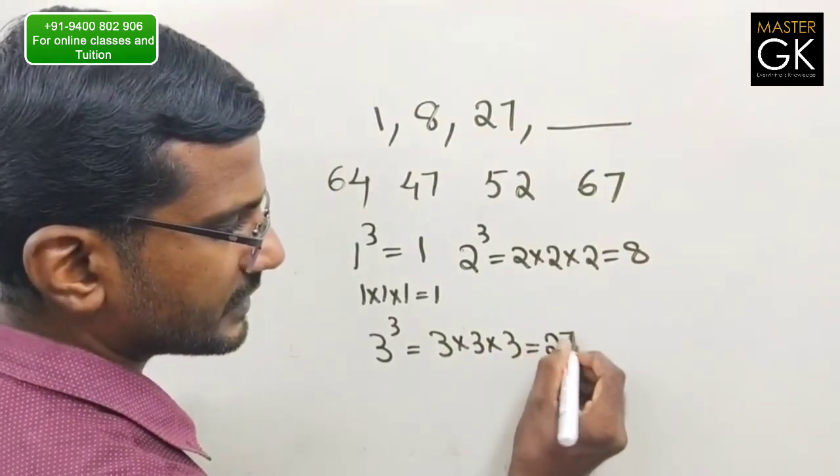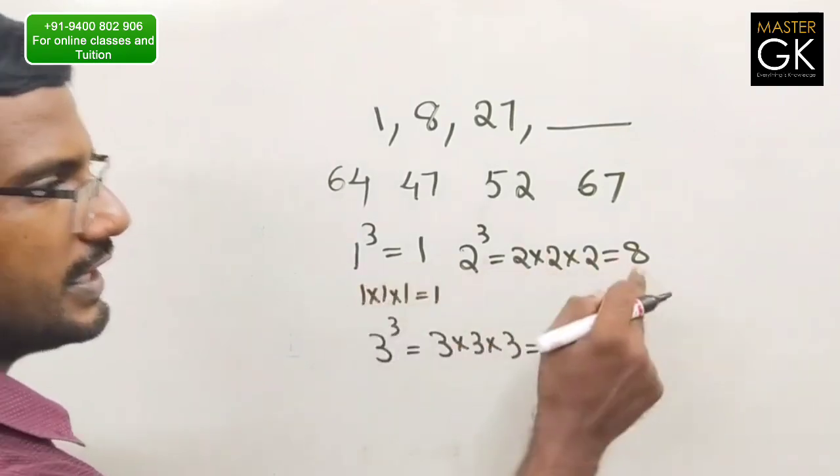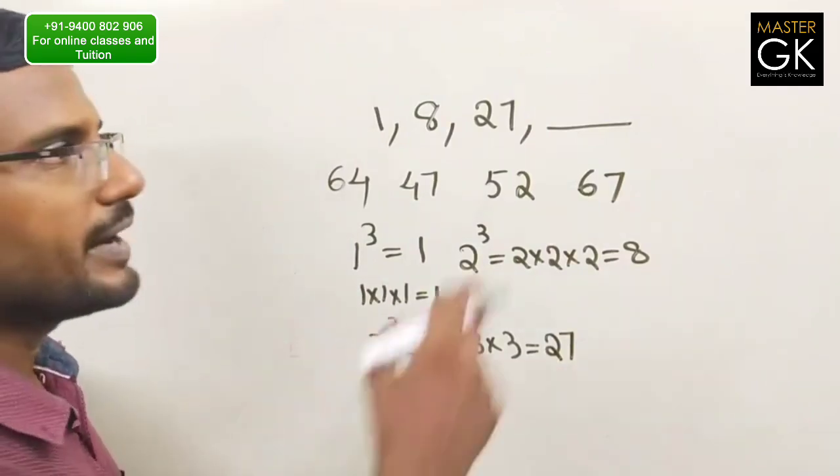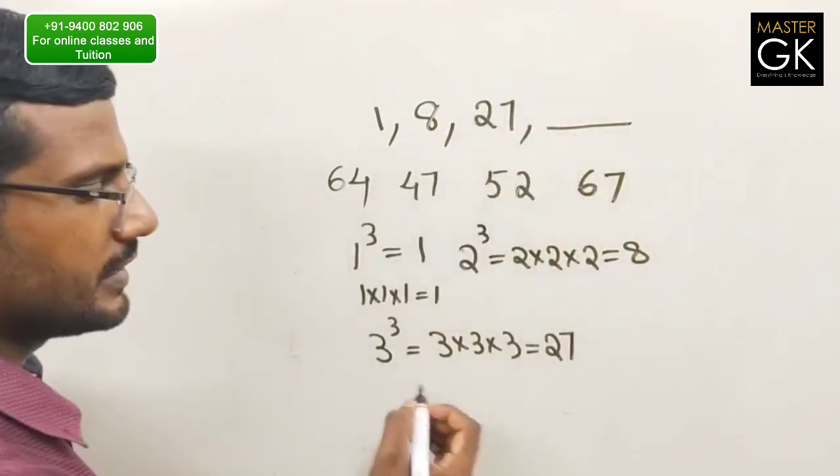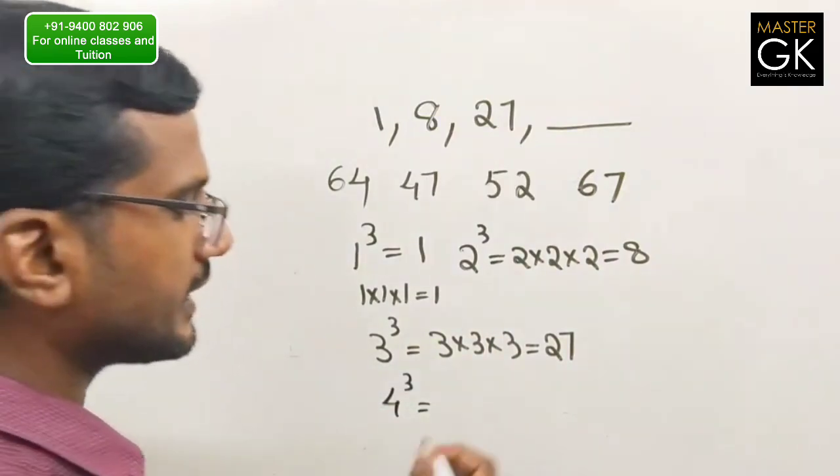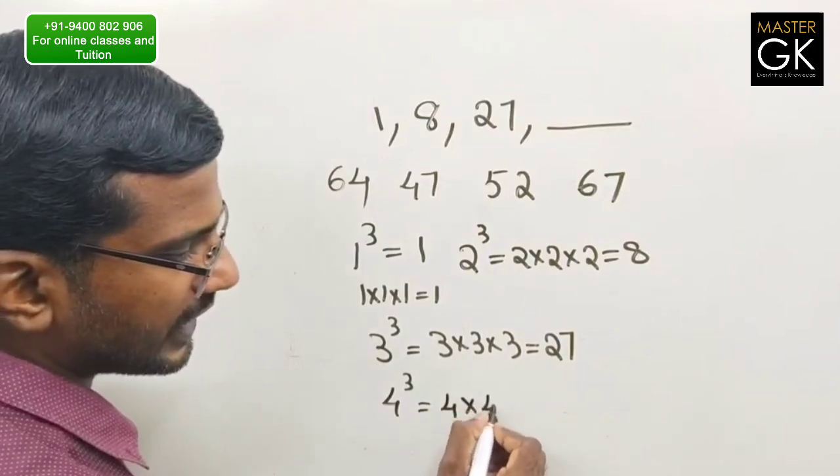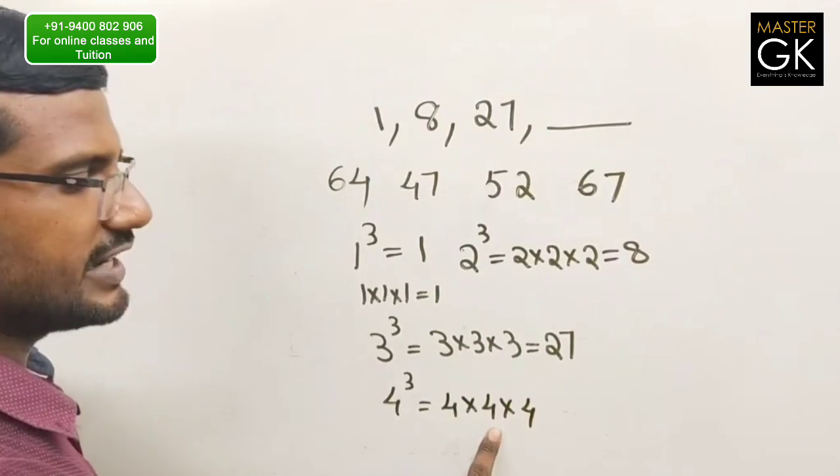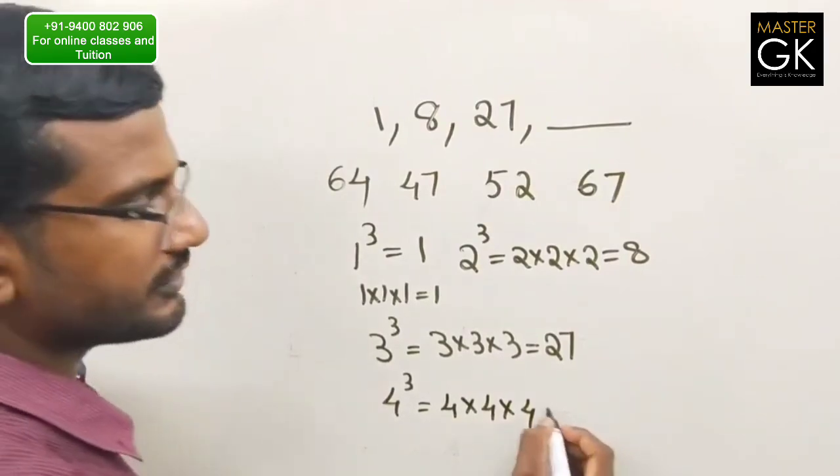27. So what are you going to do with the 4 cube? 4 cube is 4 into 4 into 4, which is 16 into 4, equals 64.